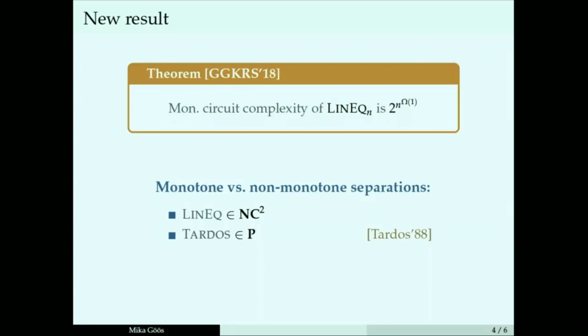This is a really simple function. It is the only other example besides Tardos's function that exhibits this exponential separation between complexities in monotone and non-monotone worlds. It admits even fast parallel algorithms. This is the class of problems that can be efficiently solved in parallel. It's not known how to do Tardos's function fast in parallel, so I can claim our function is even easier in this formal sense.